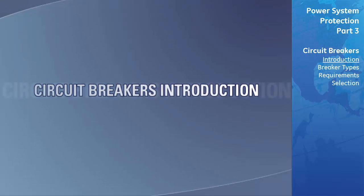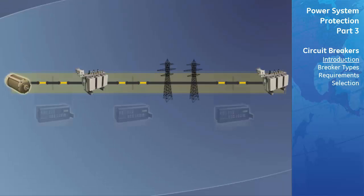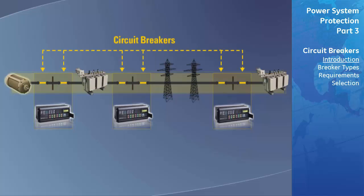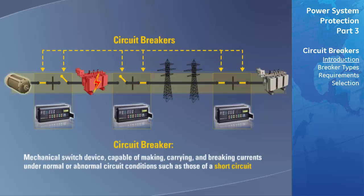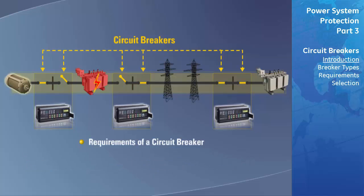Circuit breakers are an essential part of any protection scheme. At least one or more circuit breakers in conjunction with the relaying equipment are required to isolate a faulted power system component. A circuit breaker is defined as a mechanical switching device capable of making, carrying, and breaking currents under normal or abnormal circuit conditions such as those of a short circuit. In this section we will review the requirements of a circuit breaker, the different types available, their design ratings, and selection criteria.